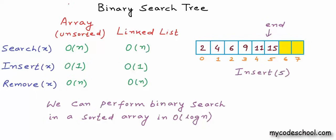In this array, if I want to insert number 5, I can't simply put 5 at the end. I first find the position — index 2 in this case — and then shift all records from that position one step to the right. So even though we find the position in O(log n), the shifting costs O(n) in the worst case. Overall, insertion and removal in a sorted array are still O(n).